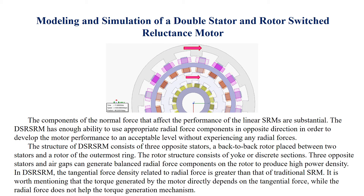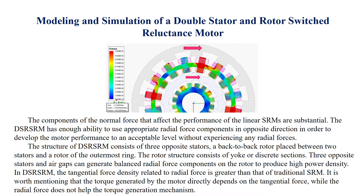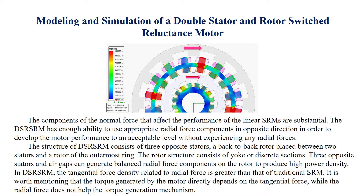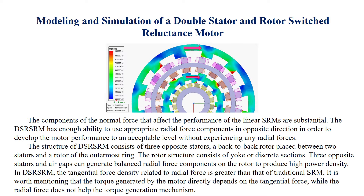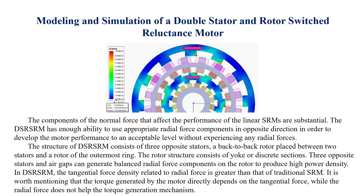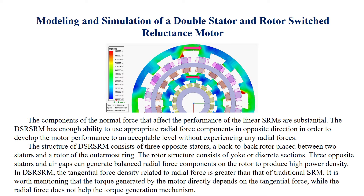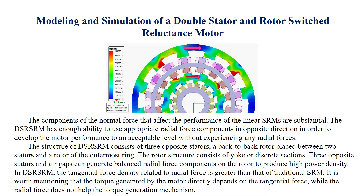The components of the normal force that affect the performance of the linear SRM are substantial. The DS-SRM has enough ability to use appropriate radial force components in the opposite direction in order to develop the motor performance to an acceptable level without experiencing any radial forces. The structure of DS-SRM consists of three opposite stators, a back-to-back rotor placed between two stators and a rotor of the outermost ring. The rotor structure consists of yoke or discrete sections, and three opposite stators and air gaps can generate balanced radial force components on the rotor to produce high power density.